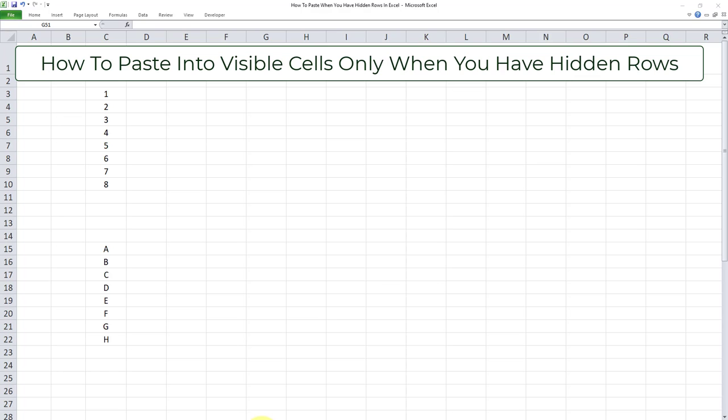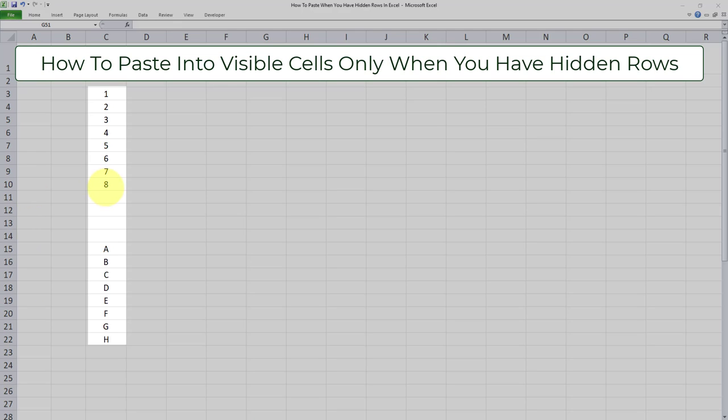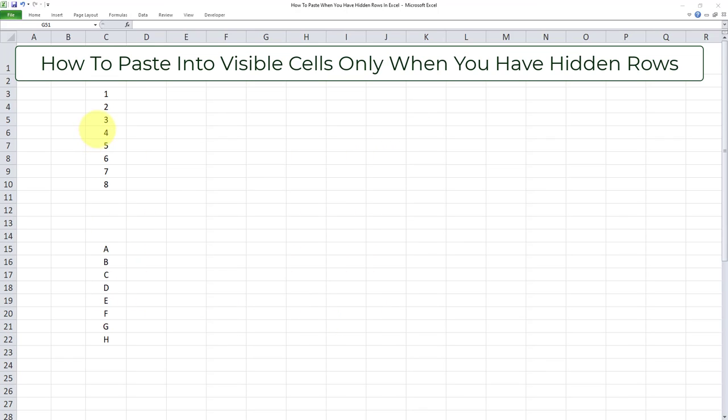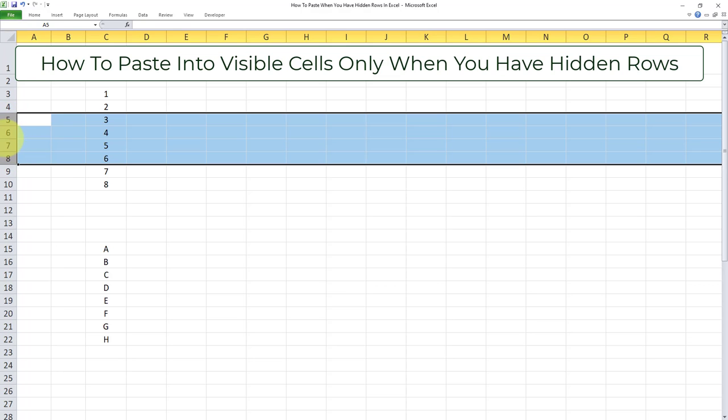In this scenario we have two datasets. We have the range 1 through 8 and characters A through H. I will attempt to hide a range within this first dataset, so I'll hide values 3, 4, 5, and 6.